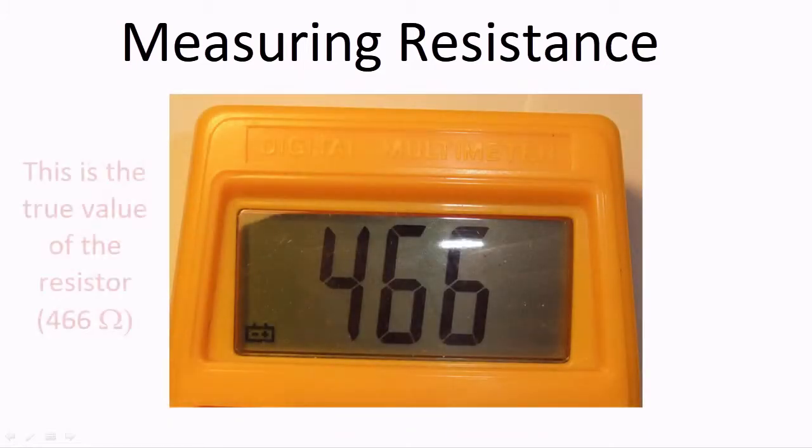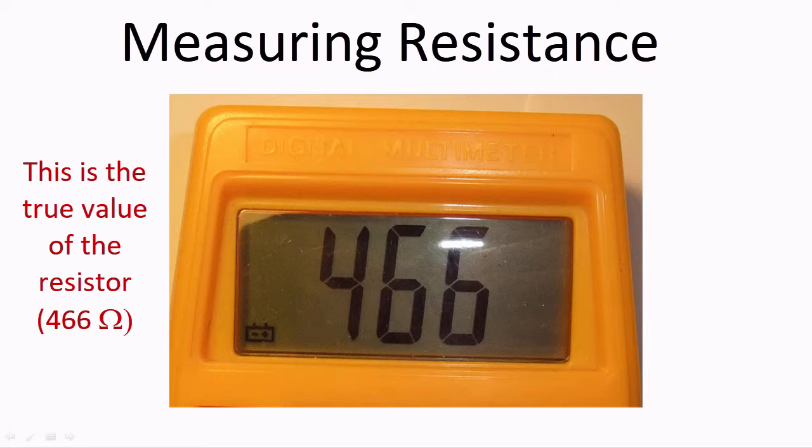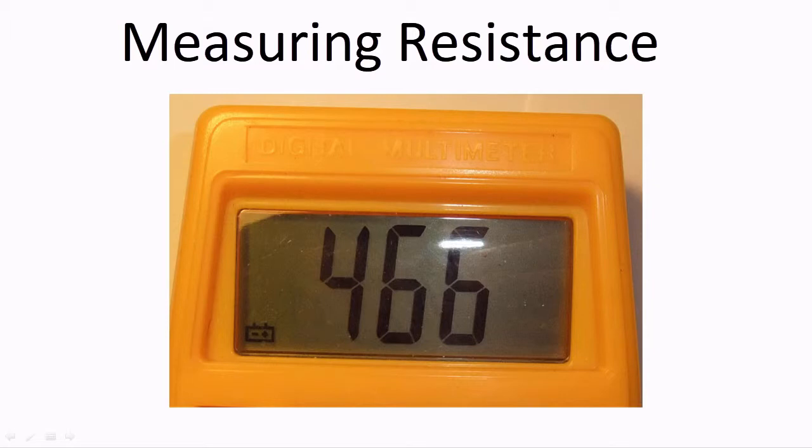Read the resistance value on the multimeter's display, so you can see that the true value of the resistor is 466 ohms, which isn't far off the expected value of 470.